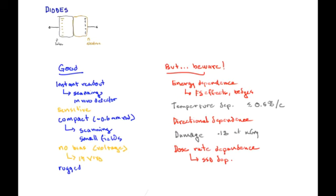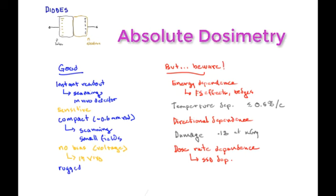Before we leave diodes, I want to mention one last thing about them: they are not used typically for absolute dosimetry. Absolute dosimetry means calibrating your machine, finding out the number of centigrade per MU—that's done with an ion chamber as we talked about in the last videos. Diodes are more useful for measuring relative dose, like scanning across a beam getting a profile or scanning up and down in a beam getting a PDD.